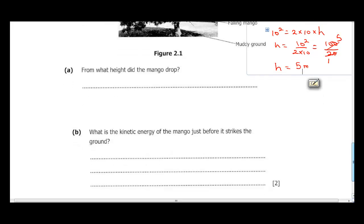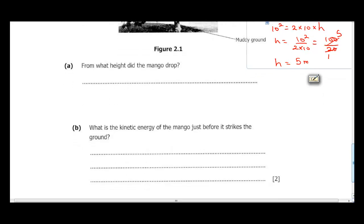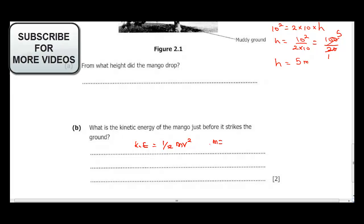The next question says what is the kinetic energy of the mango before it strikes the ground. You need to recall that the formula for kinetic energy is half times mass times velocity squared. Now our mass was given as 200 grams. Let's check the value of our mass.